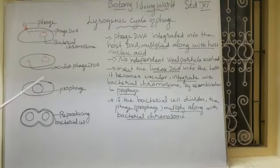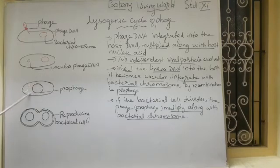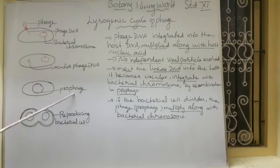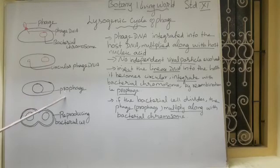They integrate with the bacterial chromosome by recombination or replication. That stage is called the prophage. At that stage, the phage DNA integrates and replicates — this is known as the prophage.